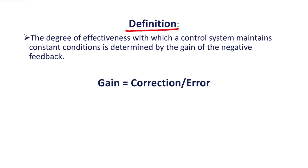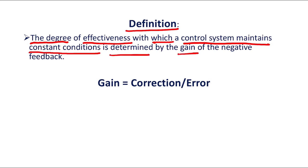First, the definition. What is the gain of a control system? The degree of effectiveness with which a control system maintains the constant condition is determined by the gain of the negative feedback mechanism — that is, up to which degree of effectiveness it maintains the constant condition. The formula for gain is: correction divided by error.